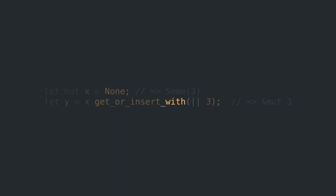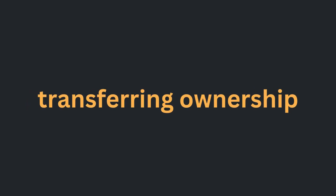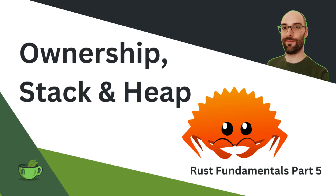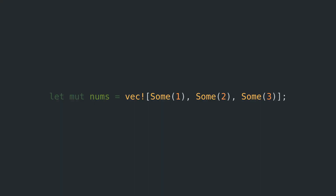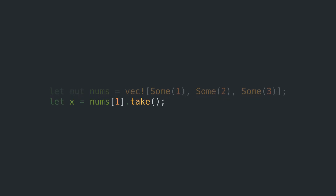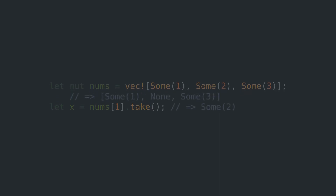There's actually one more chapter to go — transferring ownership. And if you've ever written Rust, you know that ownership is the single most important concept in Rust. You can take a value and leave a None. You can also take a value and replace it with a different value. Also rude.